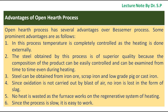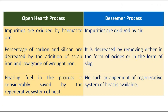Some differences between the open hearth process and the Bessemer process: Impurities are oxidized by hematite in the open hearth process, whereas impurities are oxidized by air in the Bessemer process. The percentage of carbon and silicon are decreased by adding scrap iron and low-grade wrought iron in the open hearth process, whereas in the Bessemer process they are decreased by removing them as oxides or slag. Heating fuel is considerably saved by the regenerative system of heating in the open hearth process, whereas no such arrangement of regenerative heating is available in the Bessemer process.